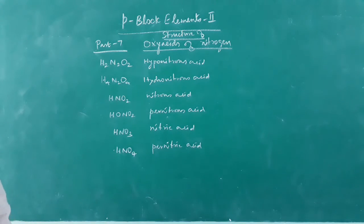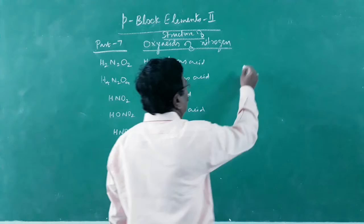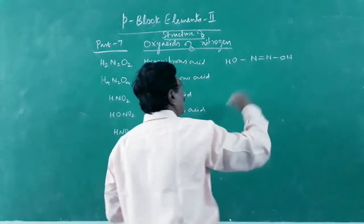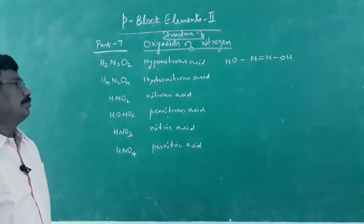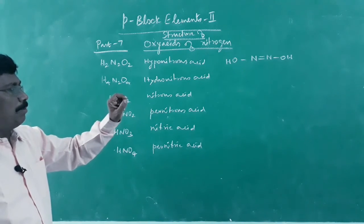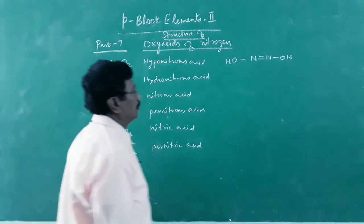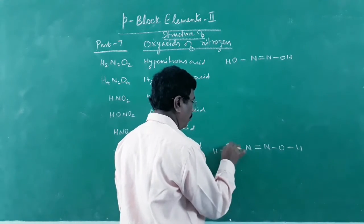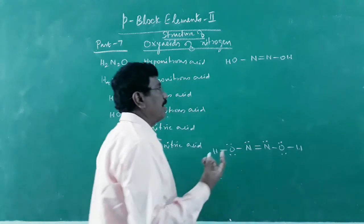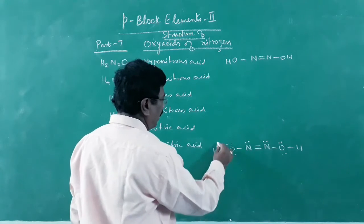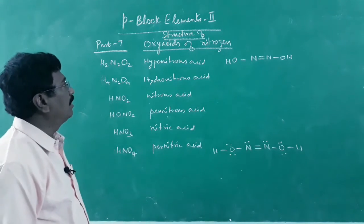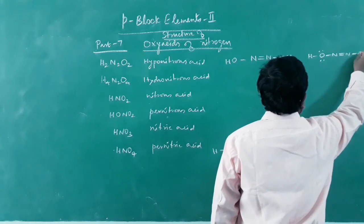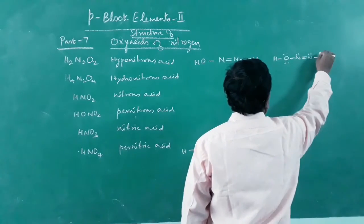The structure of hyponitrous acid: two nitrogen atoms joined by a double bond, with an OH group on each nitrogen — N=N with O−H and O−H. The electron dot formula shows lone pairs on each oxygen and nitrogen, with the hydroxyl groups that can ionize to give H⁺. But we don't need to write the elaborate electron dot structure.